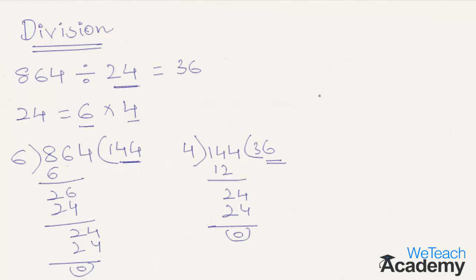This type of calculation can even be done mentally. 864 divided by the first factor 6, we get 144. Then divide 144 with the next factor, that is 4. So 144 divided by 4, we get 36.